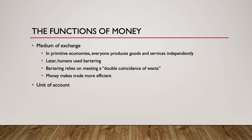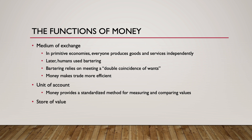Money also serves as a unit of account. Because everything has a price expressed in some amount of currency, money provides a standardized method for measuring and comparing relative values of a wide variety of goods and services. Lastly, money serves as a store of value. This is the function that enables people to save the money that they earn today and use it to buy goods and services at some point in the future. Other commodities besides physical or digital currency can serve as a store of value as well — for example, stocks, bonds, real estate, art, jewelry, or other valuables that can be converted to money and used to pay debts or purchase other items.